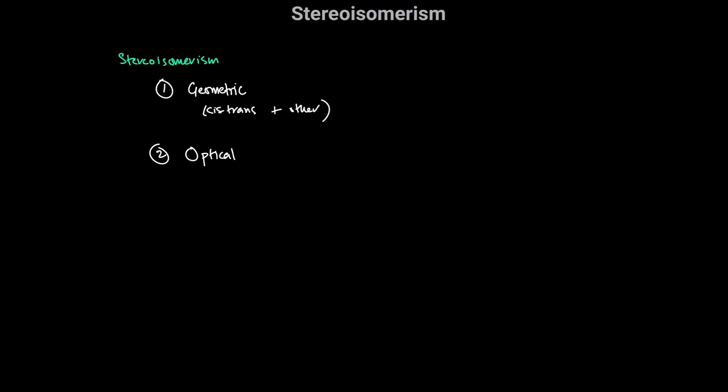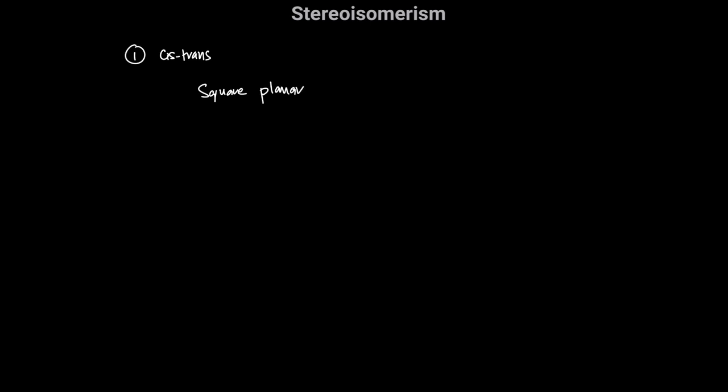First we're going to look at cis-trans isomerism, and the first case is in square planar complexes. One example is cisplatin versus transplatin. Platin has the structural formula Pt(NH3)2Cl2. Platinum has an oxidation number of +2 and you have two chlorides which are −1, so this is a neutral complex.